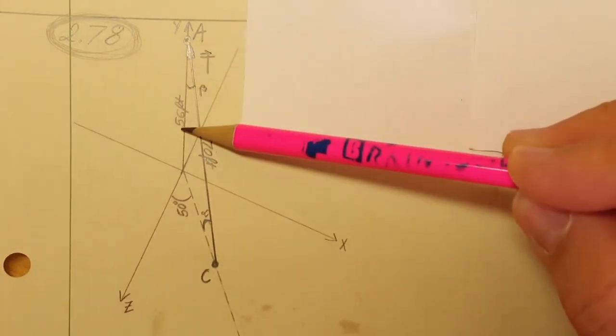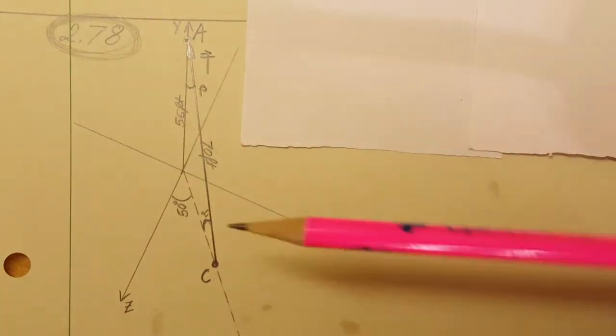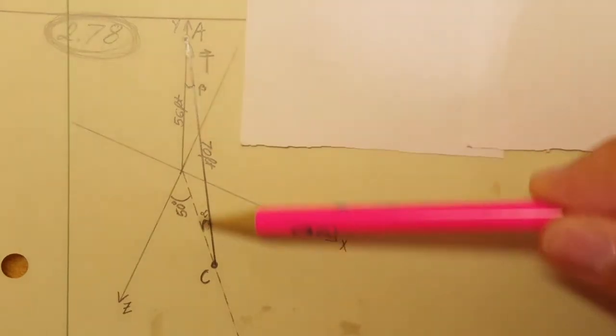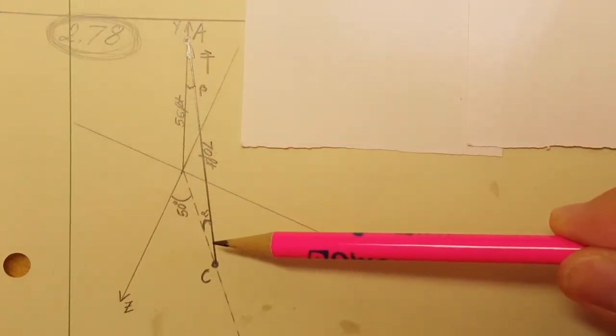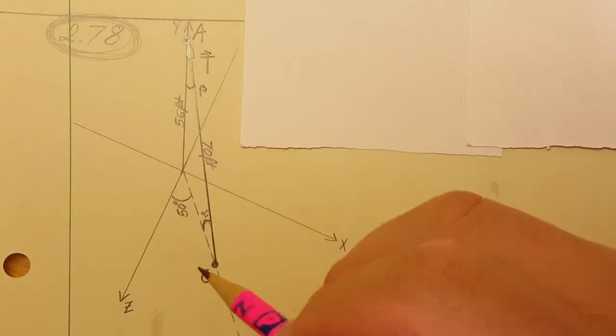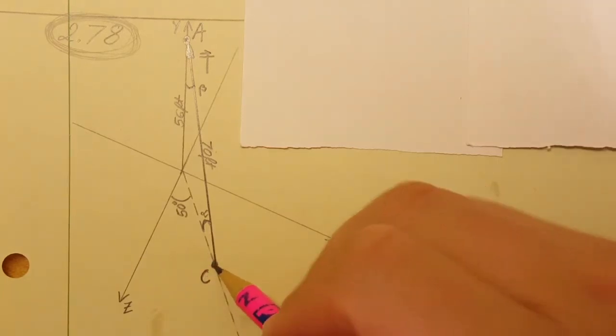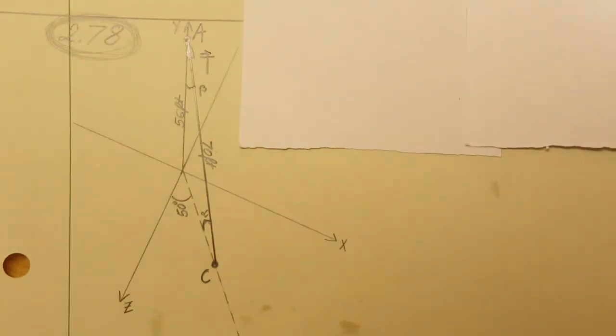Point A is 56 feet above ground, and the tension in this rope is 5250 pounds. They are asking us to find the component of the force from point C upwards, and also the angles theta x, theta y, and theta z which define the direction of this force.